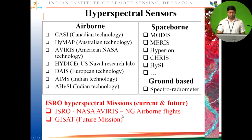Regarding ISRO hyperspectral missions, AVIRIS-NG was flown in collaboration with NASA over different parts of India to acquire airborne hyperspectral data. GISAT, the geostationary imaging satellite, also carries a hyperspectral remote sensing dataset, though with coarser spatial resolution, and will provide continuous hyperspectral data from space.